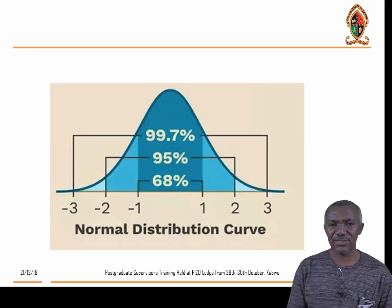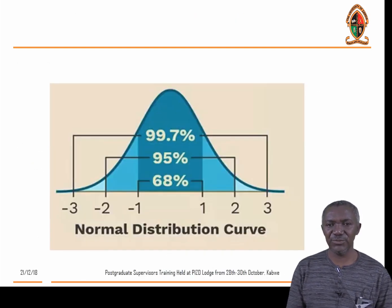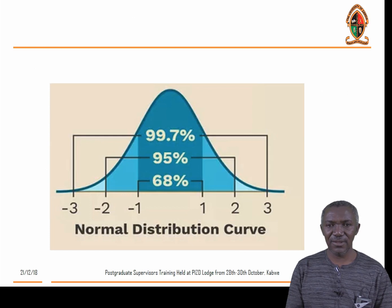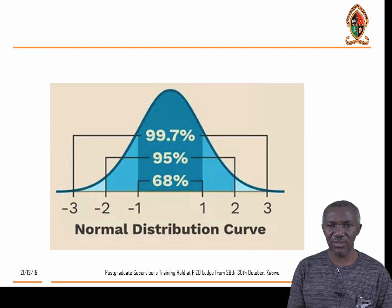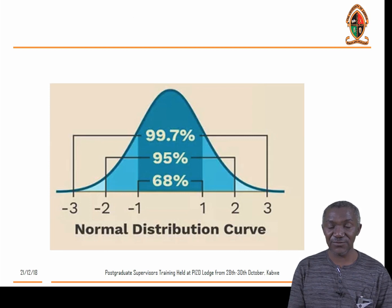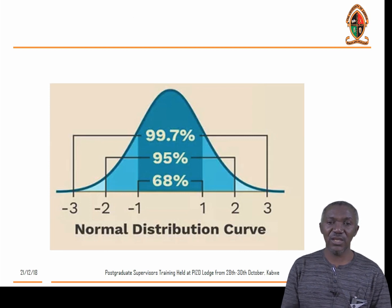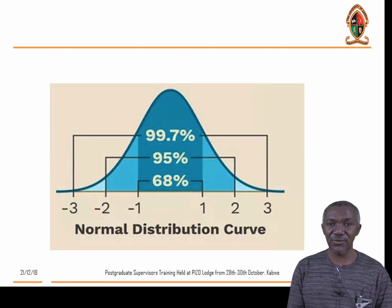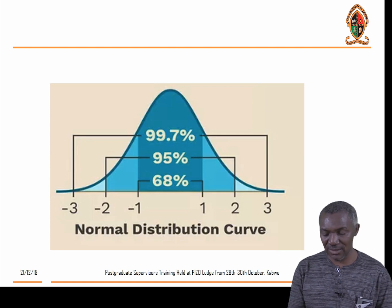If you look at this graph, this is a normal distribution — a symmetrical distribution. The mean is in the middle of this graph. The mean is a measure of central tendency in a normal distribution. It represents a central number that represents the other observations in the distribution.